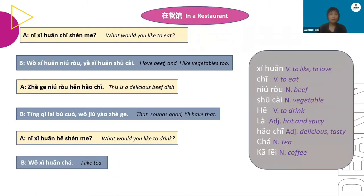Let's apply 你喜欢吃什么 and 你喜欢喝什么 to a conversation, to see how these sentences are used in real life. The conversation is between two friends, and the setting of the conversation is in a restaurant. Let's go through the conversation together.